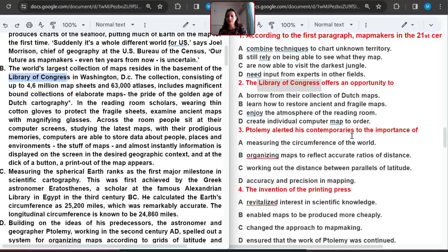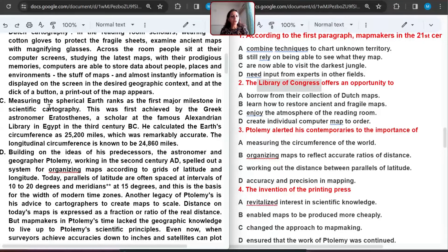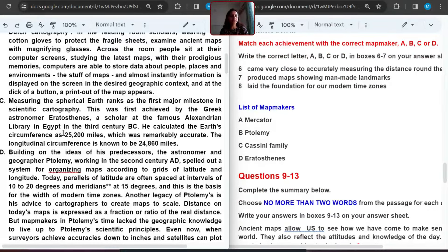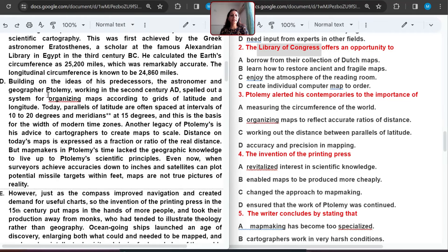Now third number. Ptolemy alerted his contemporaries to the importance of. Of course, this is the keyword to find first, and then what he has alerted his contemporaries to. B paragraph is done. Let's find this Ptolemy. In D paragraph, I can see this word. Ptolemy working in the second century spelled out a system for organizing. Building on the ideas of predecessors, the astronomer and geographer working in the second century spelled out a system for organizing maps according to the grids, latitude.